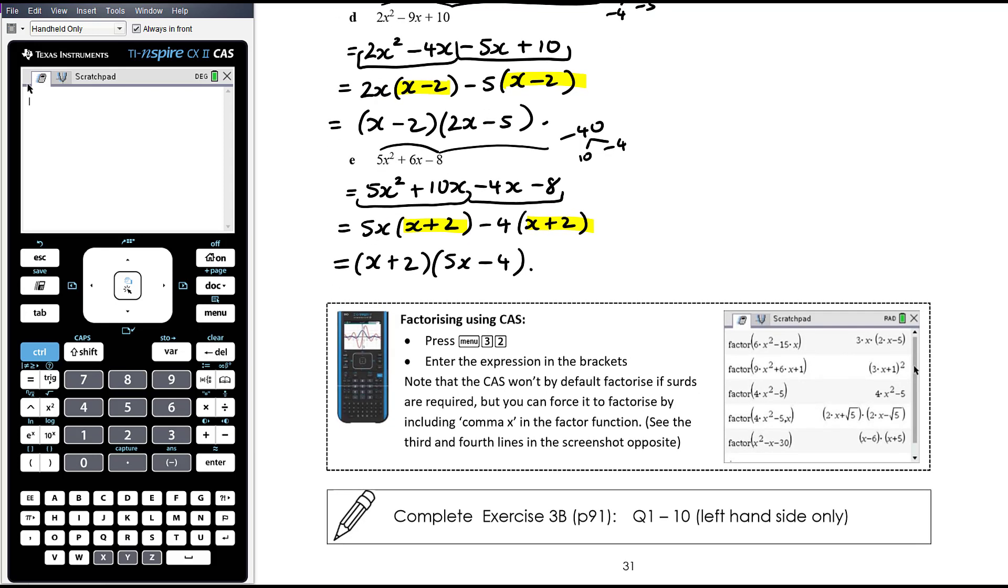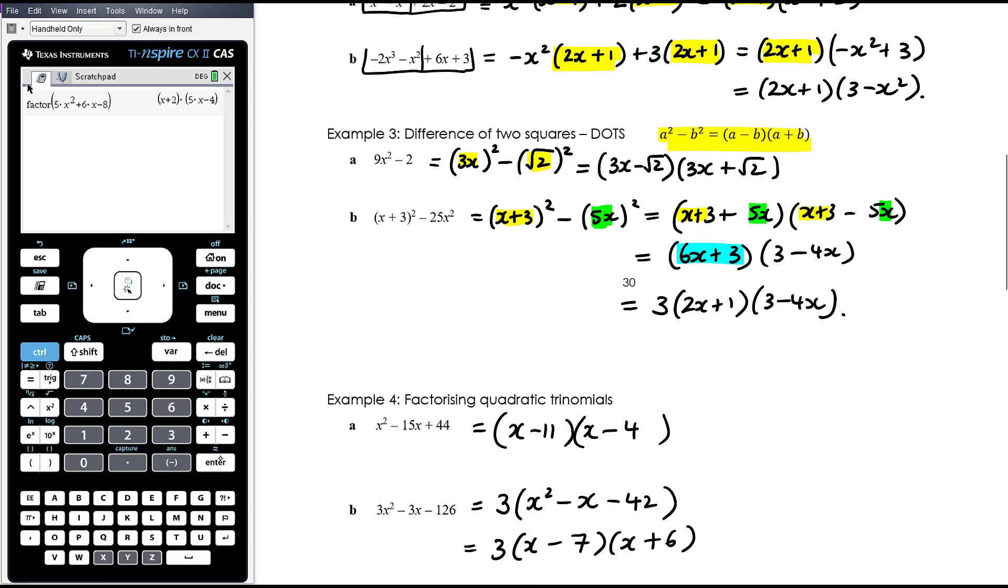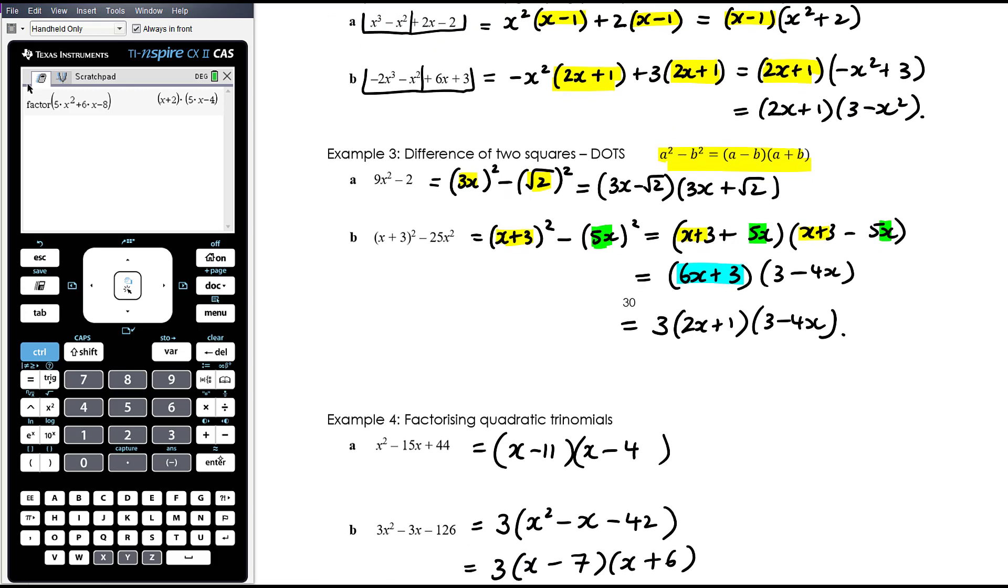Making sure also that you're aware that your CAS can factorize. So it is menu 3, 2 for factor. You simply write the thing that you're trying to factorise in the brackets. So let's say 5x squared plus 6x minus 8, the example we just did. Press enter. That's all you need to do. If it would require going to surds like example 3a did, if you just did menu 3, 2 and then typed 9x squared minus 2 in there, it wouldn't do anything. If you want to force it to factorise using irrational numbers, i.e. surds, you put comma x in there and then it will force it into that area.